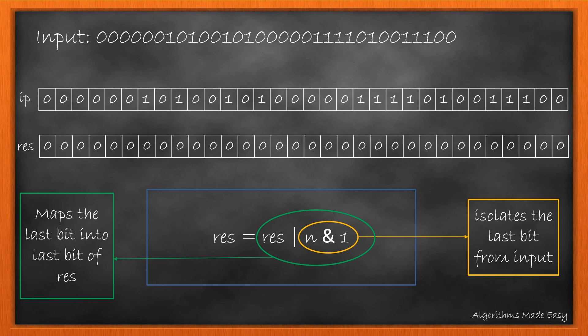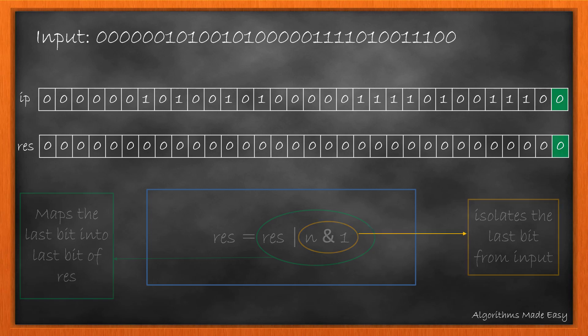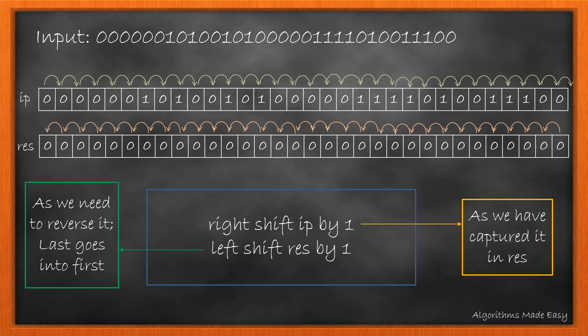The AND operation will give the value of the bit and the OR operation will put it in the result. For our example, it will copy 0 in the result. Now we need to prepare the input and response for the next iteration. So we shift the input to the right by 1 bit so that we can copy the next bit in the next iteration.